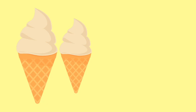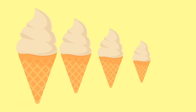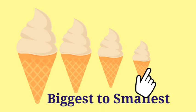Dear children, next, see this another example. See this image, children. First ice cream — very big. Next ice cream, a little smaller. Next ice cream, a little smaller. Next ice cream, much smaller. So, from biggest to smallest, changing in order — that is decreasing order. Are you clear, children?